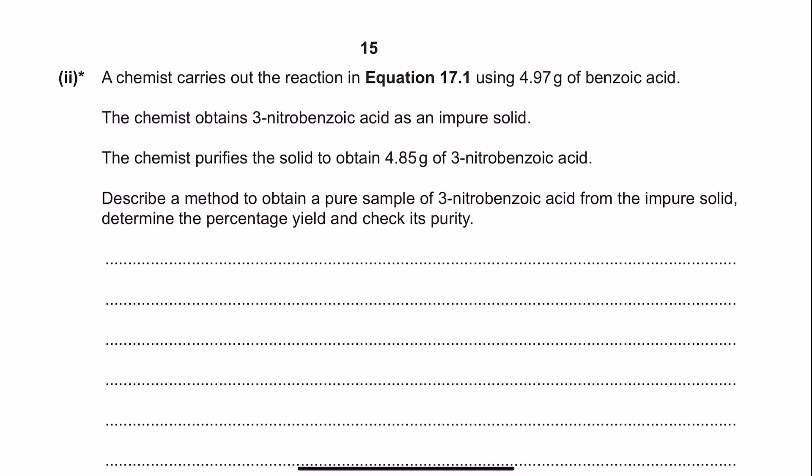We're told that a chemist carries out the reaction using 4.97 grams of benzoic acid as the reactant. The chemist obtains 3-nitrobenzoic acid, but it's impure. After purification, they have 4.85 grams of the 3-nitrobenzoic acid.